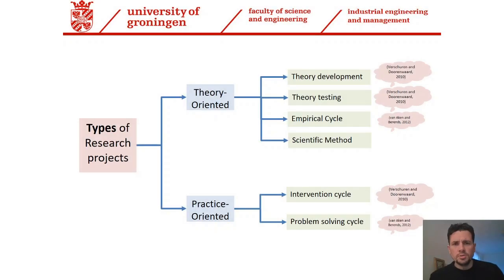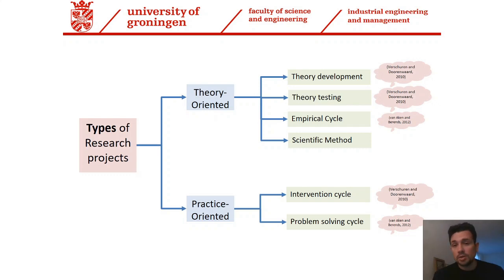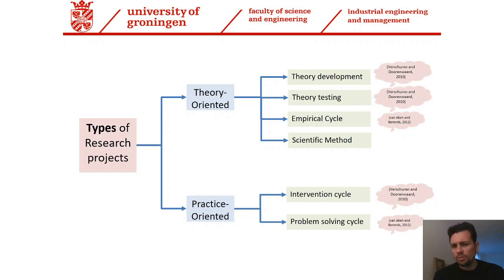Two types of research projects are the core elements of the course unit. First, we address the theory-oriented type of projects, where we develop new theories or test existing theories, or simply where the research requires two types of cycles: the empirical cycle or the scientific method. If you take a close look at both cycles, they are actually quite similar — just proposed by different authors.